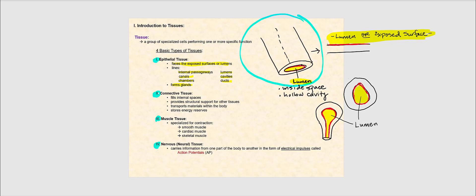Imagine a blood vessel or any tube-like structure in the body. We'll make an imaginary slice through this tube-like structure and open it up like an open book so we can find the epithelial tissue. Now that we've opened it up and identified the lumen or exposed surface, the epithelial tissue is right there — it is the tissue facing the exposed surface or the lumen.